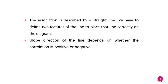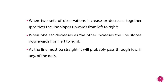In regression, the relation or association among the variables is described by a straight line. If we are showing the relation by using two-dimensional space, then we have to define two features of the line to place that line correctly on the diagram. That line may have some slope, and the slope direction depends on whether the correlation is positive or negative. So by observing the slope direction, we can check whether the correlation is positive or negative.